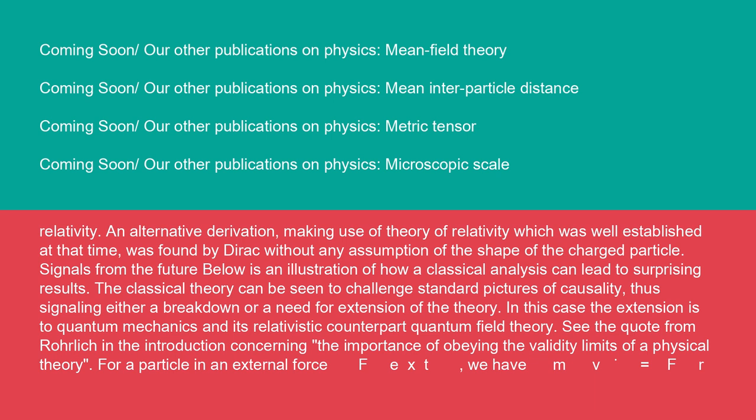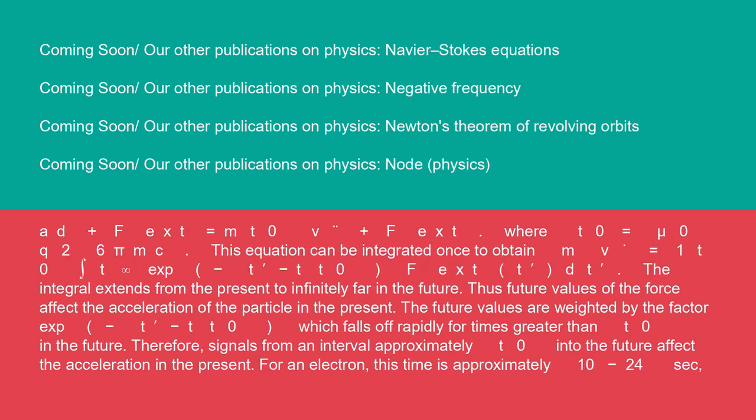Signals from the future: below is an illustration of how a classical analysis can lead to surprising results. The classical theory can be seen to challenge standard pictures of causality, thus signaling either a breakdown or a need for extension of the theory. In this case, the extension is to quantum mechanics and its relativistic counterpart quantum field theory. See the quote from Rohrlich in the introduction concerning the importance of obeying the validity limits of a physical theory.